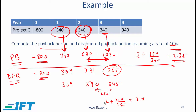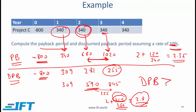To come up with the precise number, we say 2 years plus 210 over 255. Where is this 210 coming from? It is because 590 plus 210 gives us 800. So 210 divided by 255 — 255 is the difference between 845 and 590. So the discounted payback period is 2 and 210 over 255, which is approximately 2.8. The discounted payback is always going to be greater than the payback period as long as we have a positive interest rate. If the interest rate is 0, then the discounted payback and the payback would be the same, but that is very unlikely.